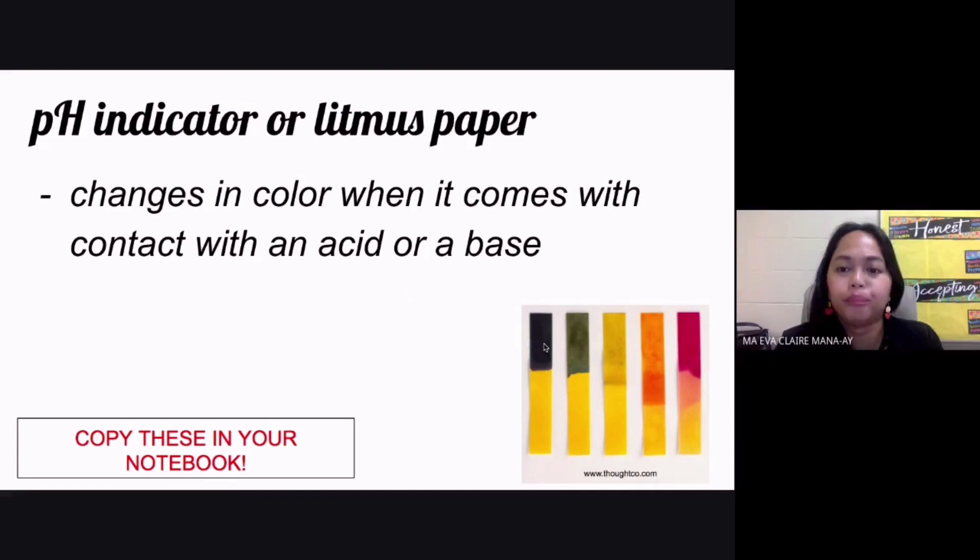Whenever it's a base, your litmus paper would usually change the color from red into blue, or if it's a blue litmus paper, it's going to just stay the same. If the substance is an acid and you have a blue litmus paper, then it's going to change its color into red.